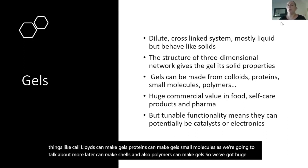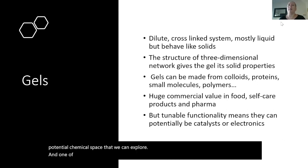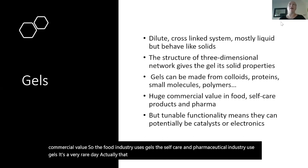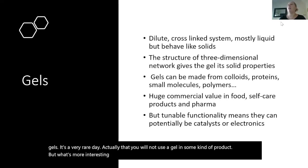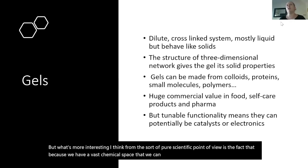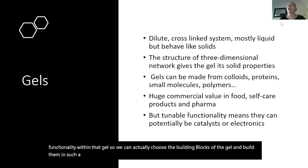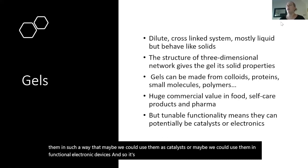The nice things about gels is you can make them from pretty much anything: colloids can make gels, proteins can make gels, small molecules can make gels, and also polymers can make gels — so we've got a huge potential chemical space to explore. One of the reasons it's really important to understand these is they have huge commercial value: the food industry uses gels, the self-care and pharmaceutical industry uses gels. But more interesting from the pure scientific point of view is that because we have a vast chemical space, we can potentially have tunable functionality — we can tune the building blocks to maybe use them as catalysts or in functional electronic devices. So it's not just about shampoos and foodstuffs; it's something much more exciting.